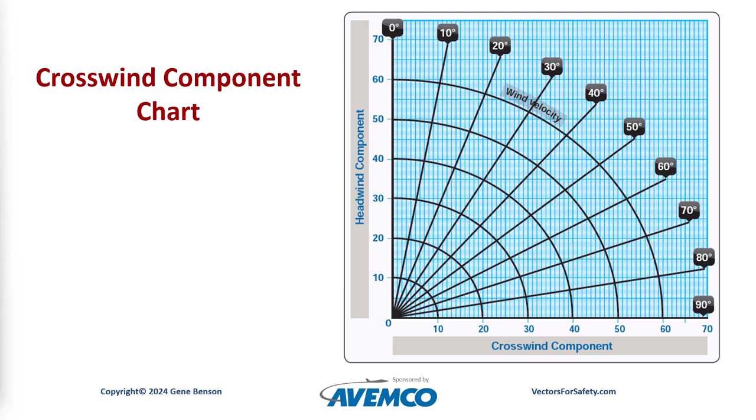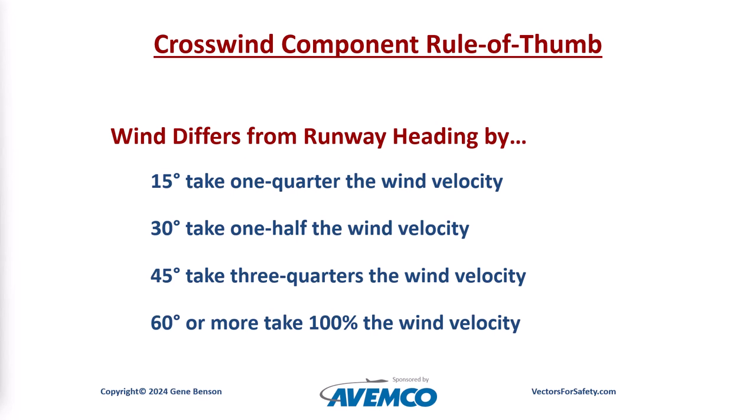We are all familiar with this crosswind component chart. For a rule of thumb without the chart, we can come close. If the wind differs from the runway heading by 15 degrees, the crosswind component is one quarter or 25 percent of the wind velocity. If the difference is 30 degrees, the crosswind is half of the reported wind speed. If the wind makes a 45 degree angle with the runway, the crosswind component is three quarters or 75 percent of the overall wind speed. And when the wind sock is pointing 60 degrees or more from the runway centerline, we just assume that the crosswind is the same as the total wind — it's pretty close, and you'd only be overestimating the crosswind component, which is probably not a bad idea.